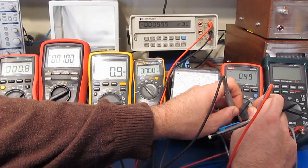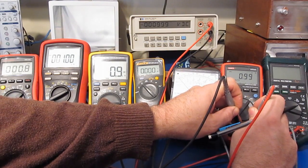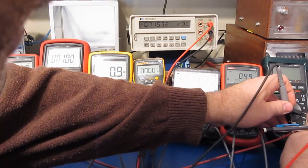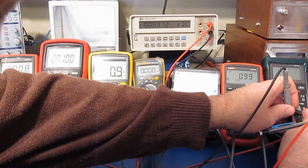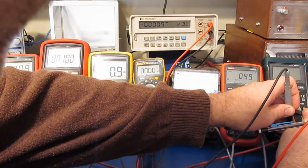Again, the UT61E should be roughly a millivolt. Which it is. And the Maztec should again be roughly 100 microvolts. Which it is.